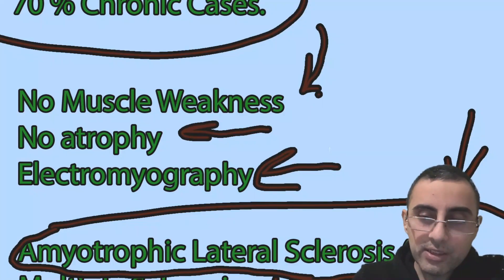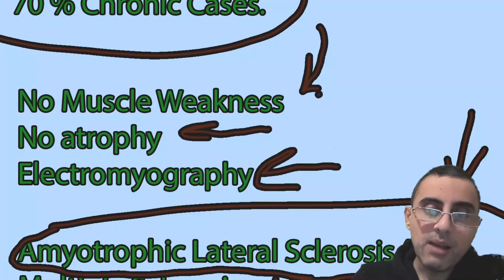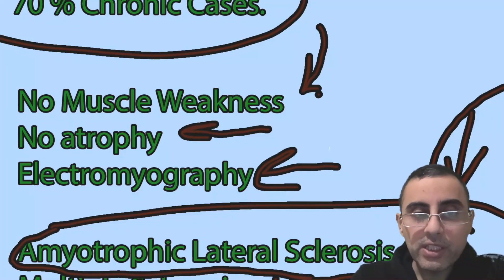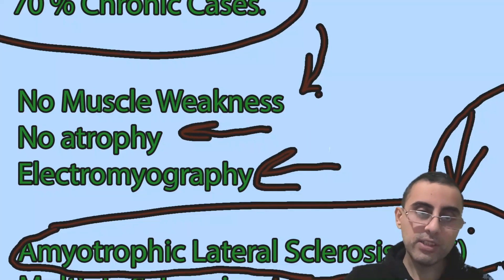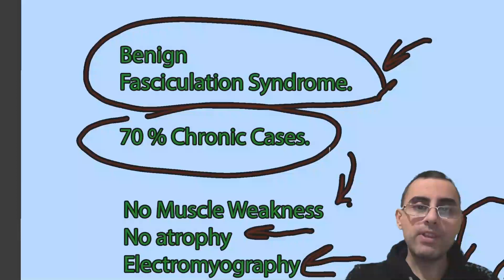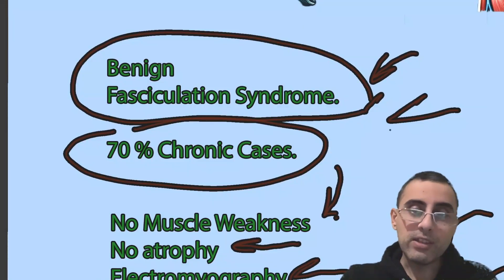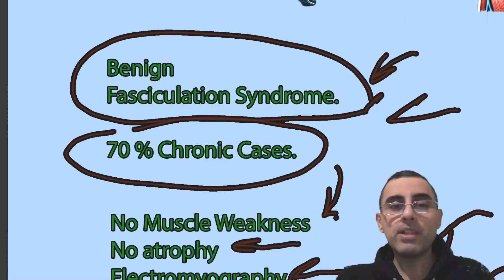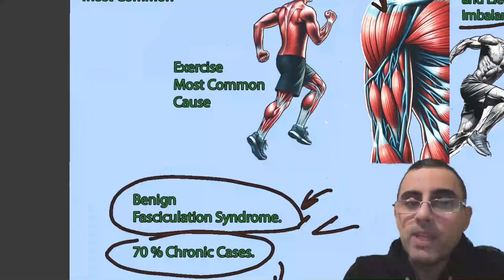For amyotrophic lateral sclerosis, fasciculation is very characteristic — it is a very serious condition to be aware of. If there is no muscle weakness, no atrophy, no chronic nature, and no progression, it is typically not ALS — it is usually benign fasciculation syndrome. There is no specific treatment for benign fasciculation syndrome, but the condition can be improved by reducing caffeine and alcohol intake, and by improving sleep quality.